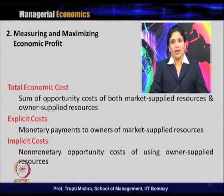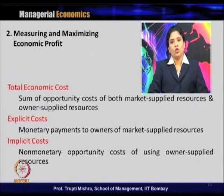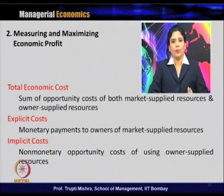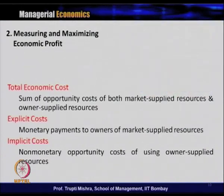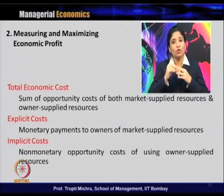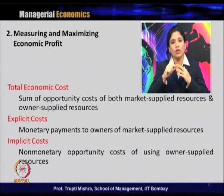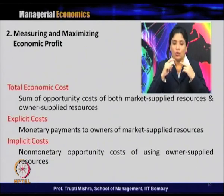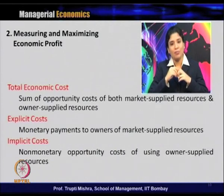Total economic cost is always the cost of both market-supplied resources and owner-supplied resources. We call it opportunity cost because in the case of owner-supplied resources, which are owned by the firm, there may be no direct valuation — yet there is always an opportunity cost even if there is no direct cost. From this we get two categories: explicit cost and implicit cost.